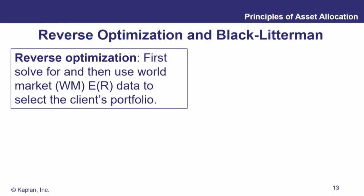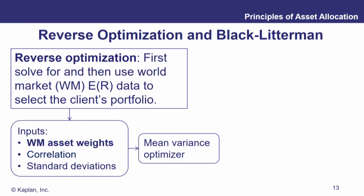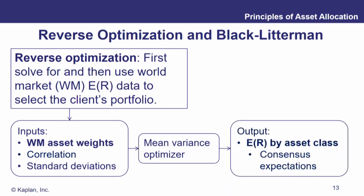Let's look at reverse optimization and Black-Litterman a little more closely. With reverse optimization, we solve for and use the world market expected return data to select the client's portfolio. We start with the market portfolio and use that to inform what we think the expected returns on the various asset classes should be. We use the world market asset weights, correlations, and standard deviations, run them through our mean variance optimizer, and figure out how much we should be investing in each asset class. Hopefully this meets some sort of consensus expectations.